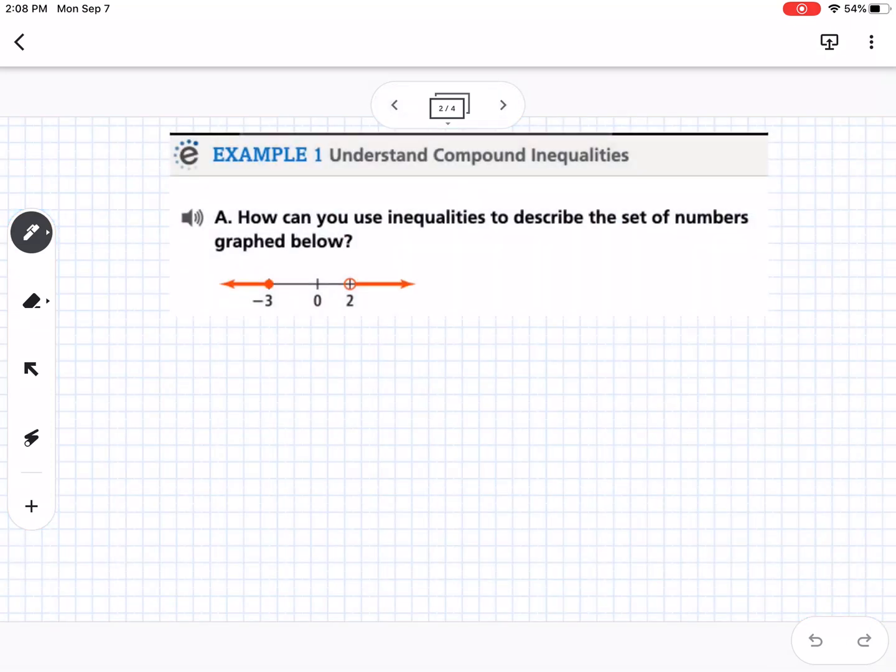So one that is an or inequality and one that is an and. So this example, you can see it's split. It's impossible for a number to be both less than negative three and greater than two. So this is what we call an or inequality.